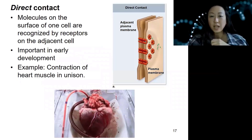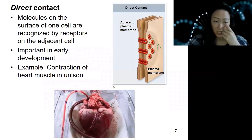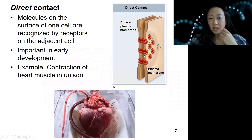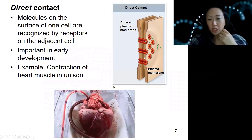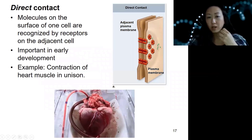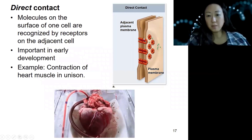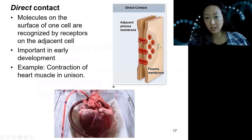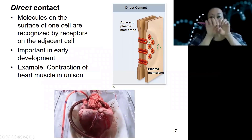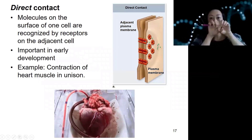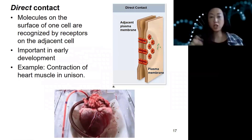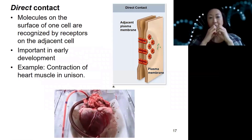Direct contact is when you need two cells that actually come into contact with each other. Drawn out on the right are two cells coming next to each other, and they actually have these red pores — pore structures made of protein — and these green ions are actually able to pass through the channel and talk to each other.